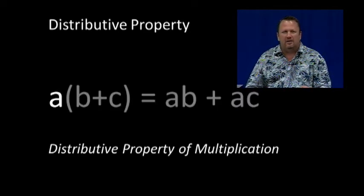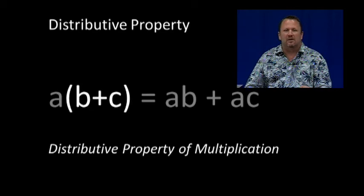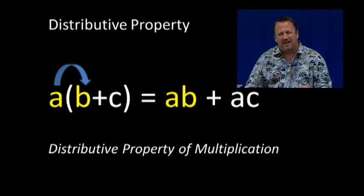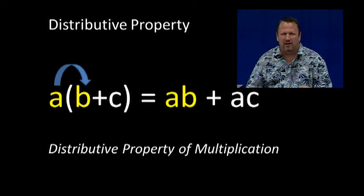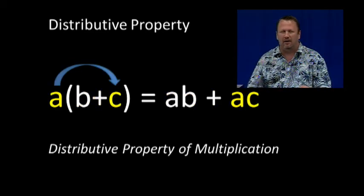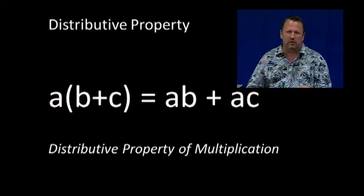a times the sum of b plus c is equal to a times b plus a times c. This is the distributive property of multiplication.